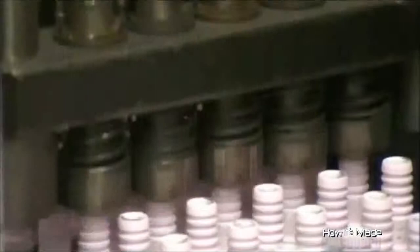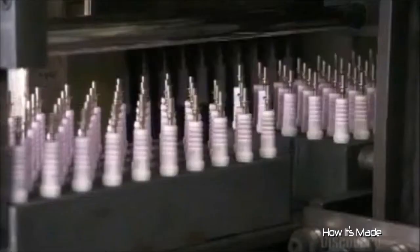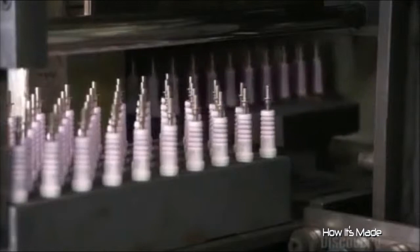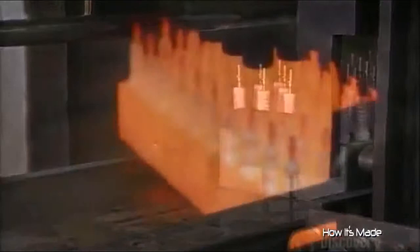They then insert the terminal studs into the insulator. The stud will act as the electrical connection to the center electrode. The insulators now go into an oven. The black powder melts around the studs and center electrodes to seal them inside the insulator cavity.